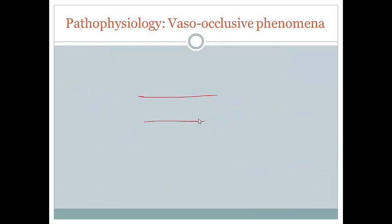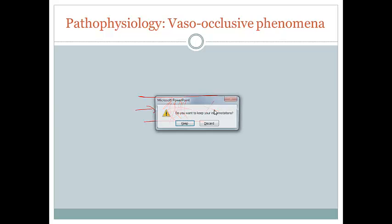When we talk about vaso-occlusive phenomenon, we already mentioned how the sickled red blood cells are less flexible and more sticky. In those smaller vessels they're going to block off blood flow, and that's going to have whole body systemic effects — which we're going to discuss in the next section on signs and symptoms.